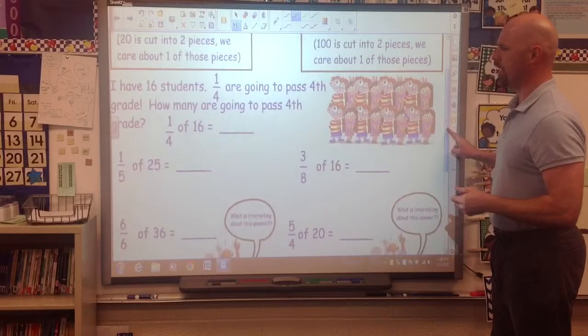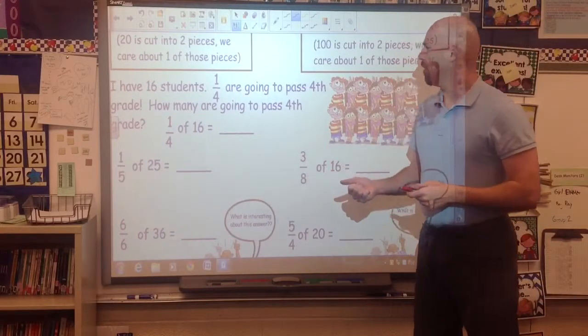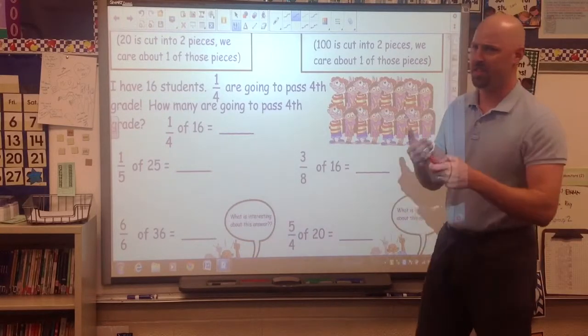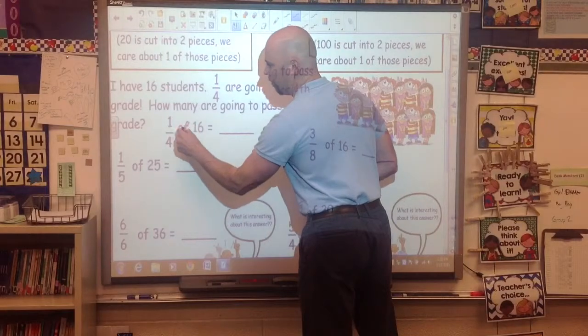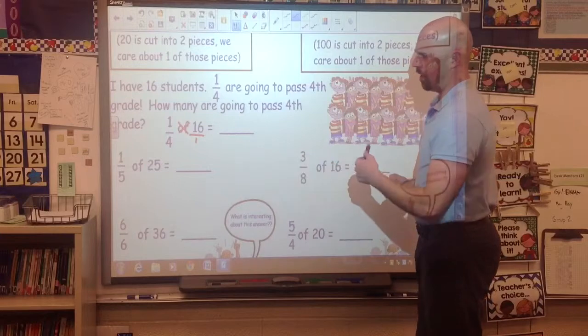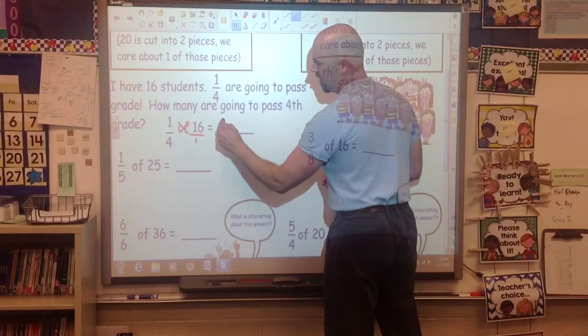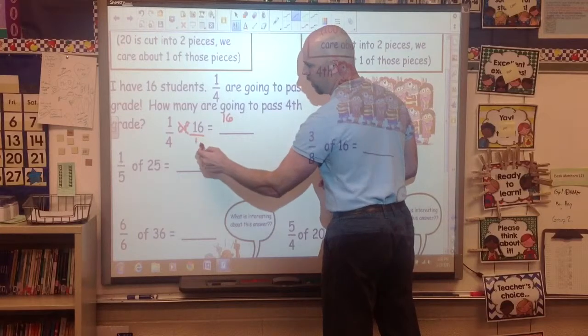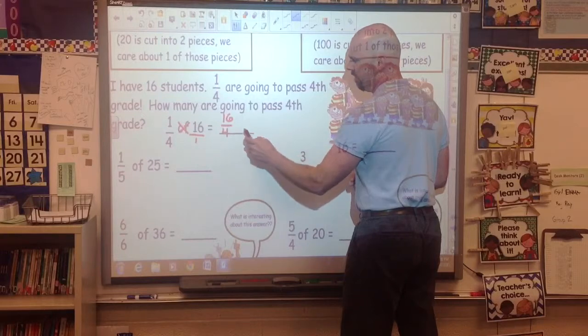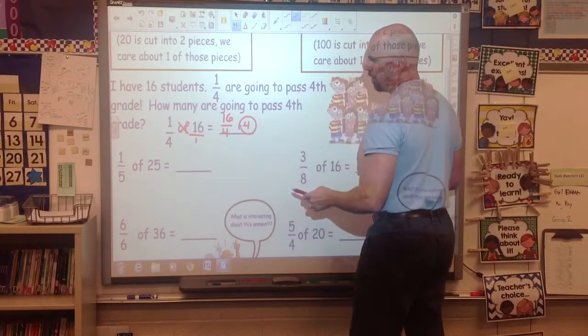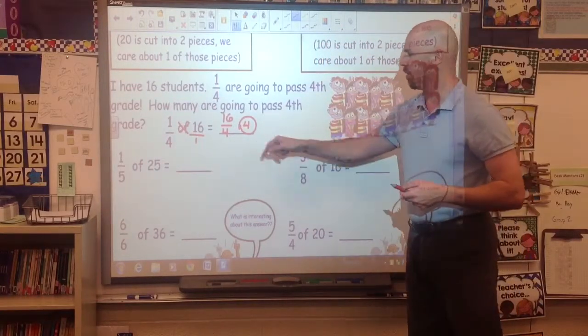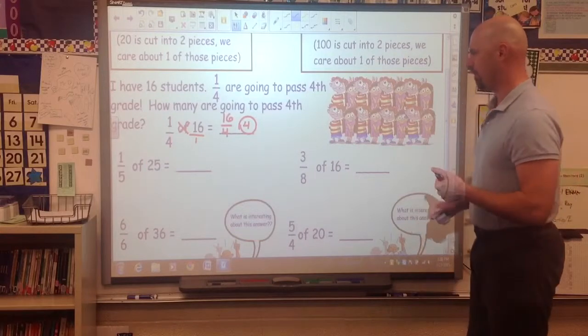Let's look at some of the other problems we have here. I have 16 students. One-fourth are going to pass fourth grade. How many are going to pass fourth grade? One-fourth of 16. That's another fraction of problem. So, we're going to multiply when we see of. And there's our invisible 1. Now, let's multiply across. 1 times 16 is 16. 4 times 1 is 4. And it's a division problem again. 16 divided by 4 is 4. One-fourth of 16 is 4. So, I have four groups of 4. Four kids are passing.